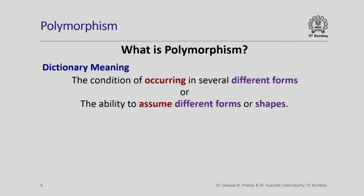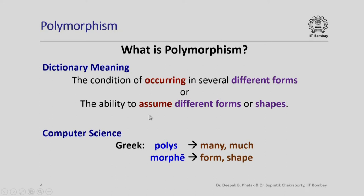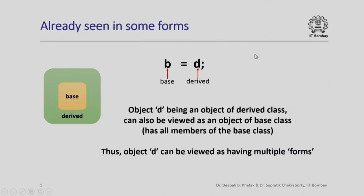What is polymorphism? The dictionary meaning of polymorphism is the condition of occurring in several different forms, or the ability to assume different forms or shapes. In computer science, we use it in the same sense. The word polymorphism has two parts: the 'poly' part means many or much, and the 'morph' part means form or shape. So in computer science, we refer to polymorphism when a particular object or entity can assume different forms or shapes depending on the context in which it is used. We have already seen some form of this in previous lectures.